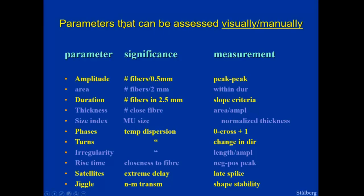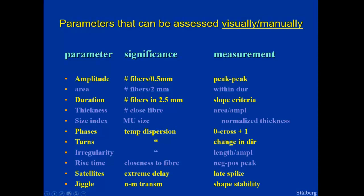Therefore the different parameters tell us different stories. Here are the parameters that we can assess visually or manually: amplitude, duration, number of phases, turns and satellites, and instability. These parameters tell us about number of fibers close to the tip, total number of fibers within a larger area, and temporal dispersion of the signals. We measure the duration from start to end according to a special definition, number of phases above and below the baseline, or perhaps more accurately the number of turning points — because not all turns cross the zero line so it does not produce phases, but the number of turns can be many. So we talk about polyphasic, poly-turns, serrated, or complex.